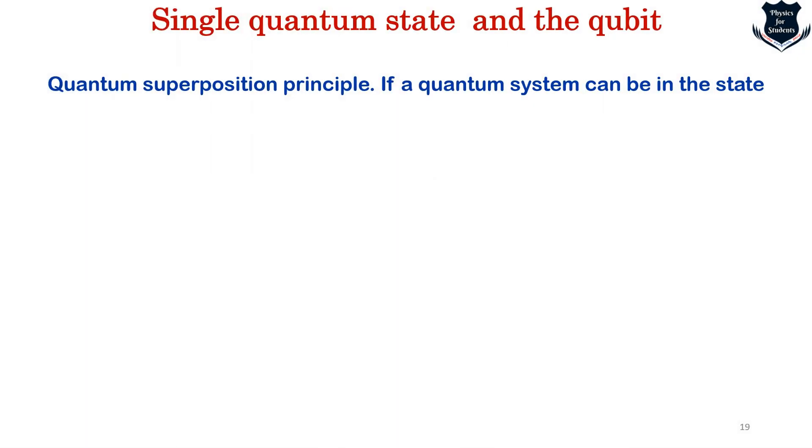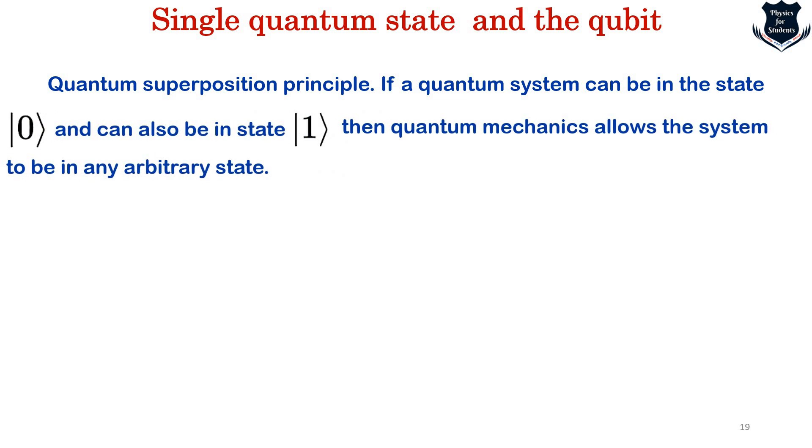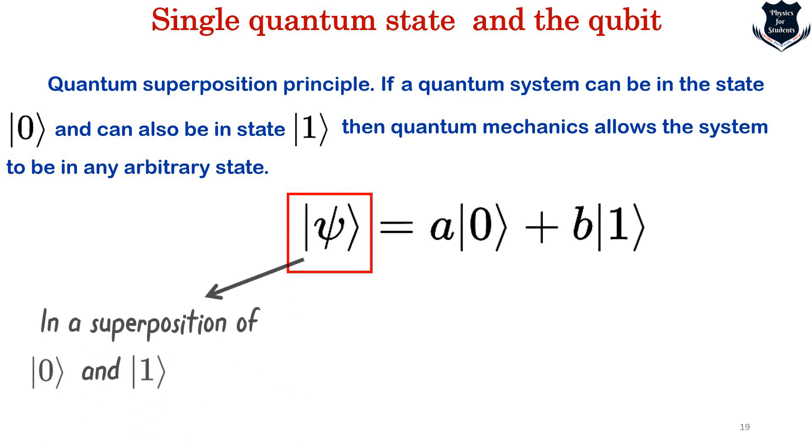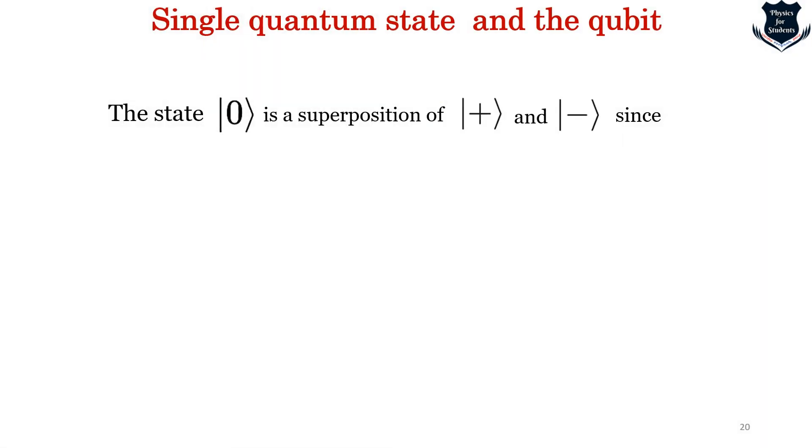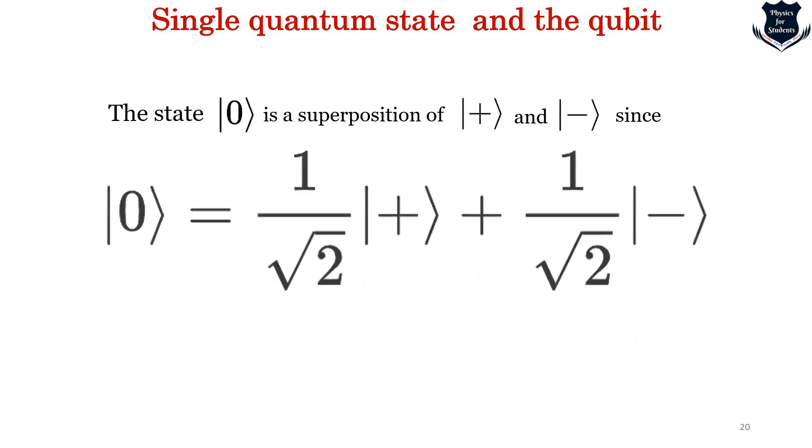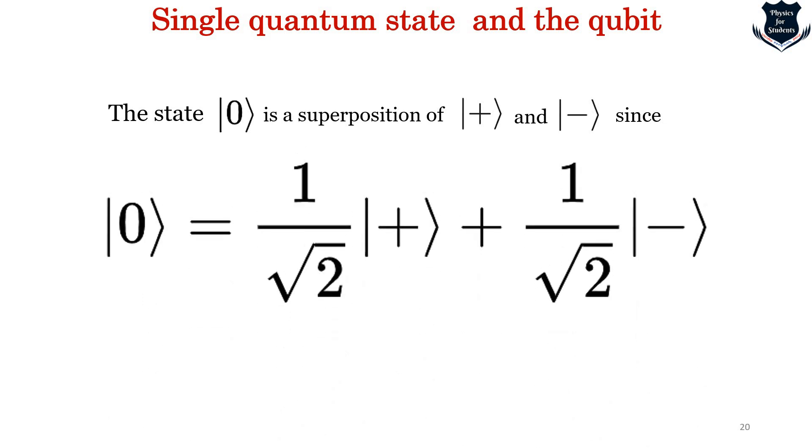The quantum superposition principle states that if a quantum state can be in state 0 and it also can be in state 1, then quantum mechanics allows it to be in an arbitrary superposition. You see this equation - we say this psi is actually in a superposition of 0 and 1, and A and B are basically called probability amplitudes. Finally, the state 0 is a superposition of plus and minus since this is how the equation happens.